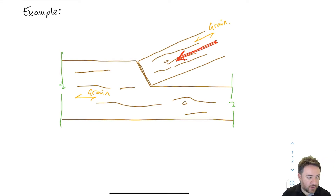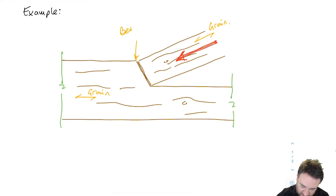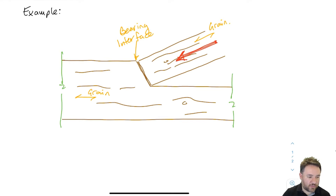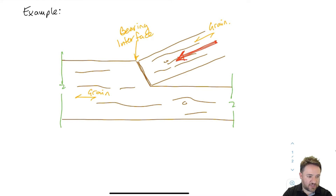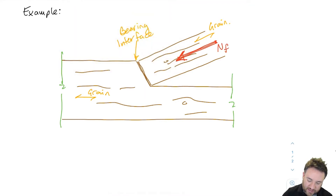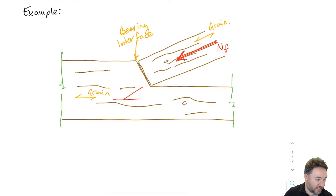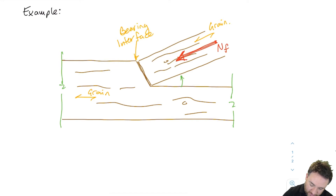To calculate the bearing resistance at the bearing interface for the top piece of wood, we just use the compression parallel strength — that part is easy. But for the bottom piece of wood, the load F is at an angle to its grain direction. The grain direction runs this way, and the load is coming in like this, at some angle theta relative to the grain.